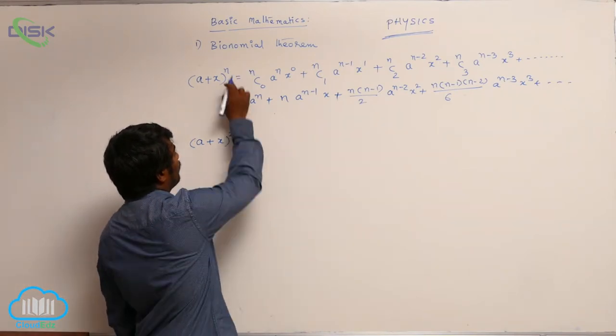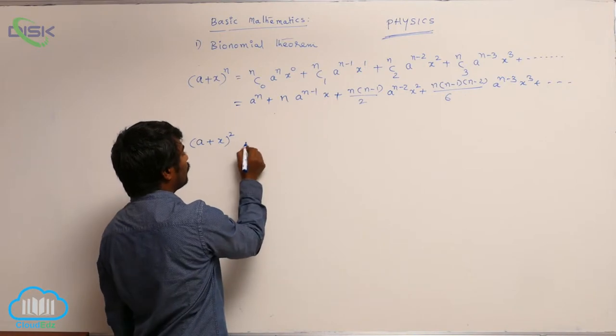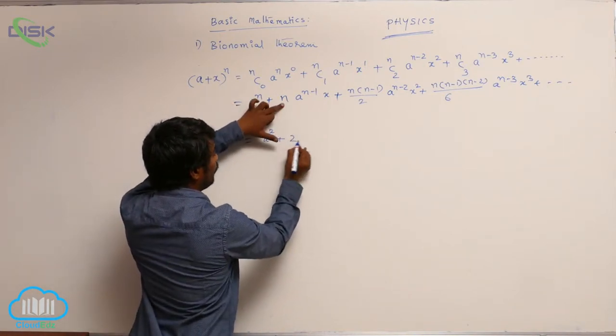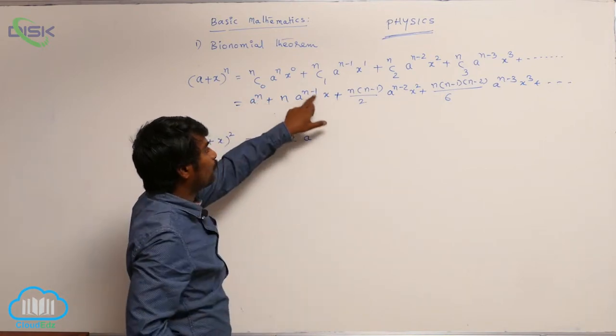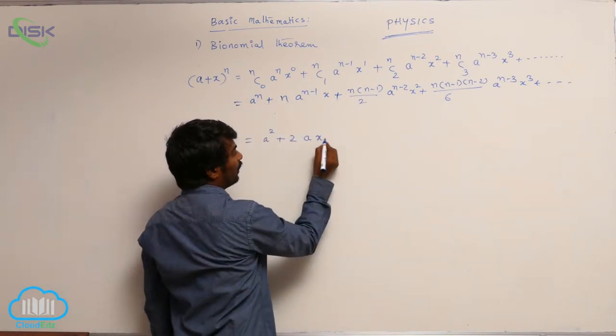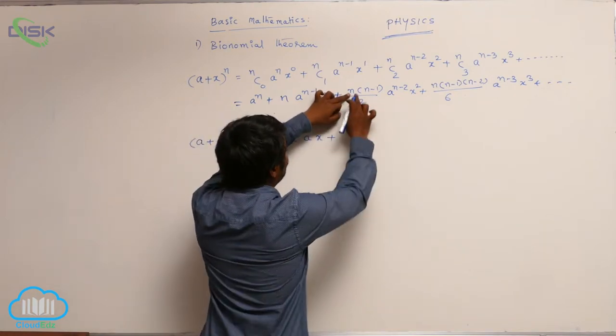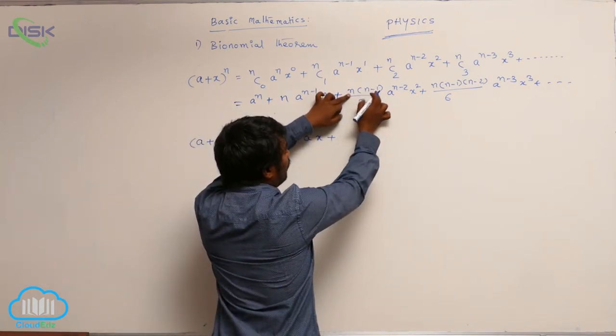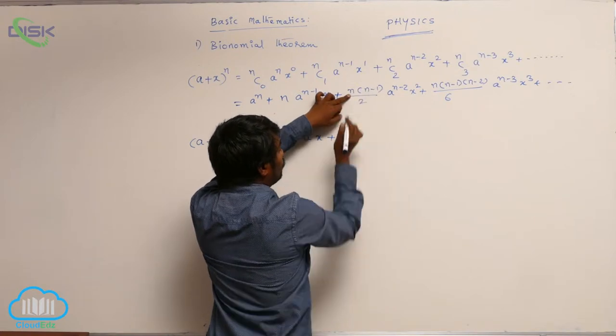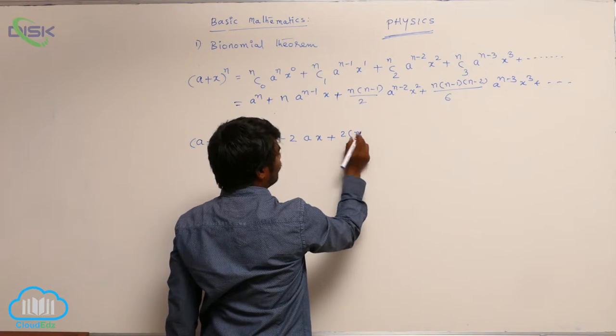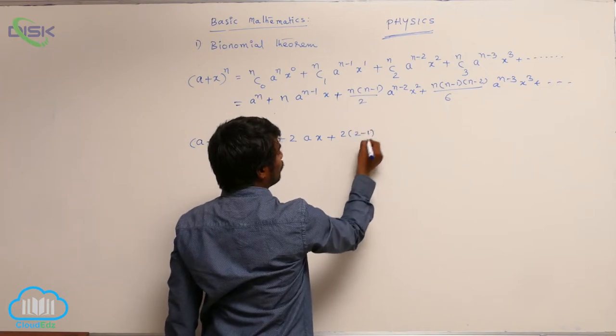Wherever n is present, you just write down 2. So a^2 plus 2 times a^(2-1) times x, plus 2 times (2-1) divided by 2... 2 minus 1 is 1, so 1 into 2, 2 by 2, that equals 1. Let me write this down. Let me take one more step.